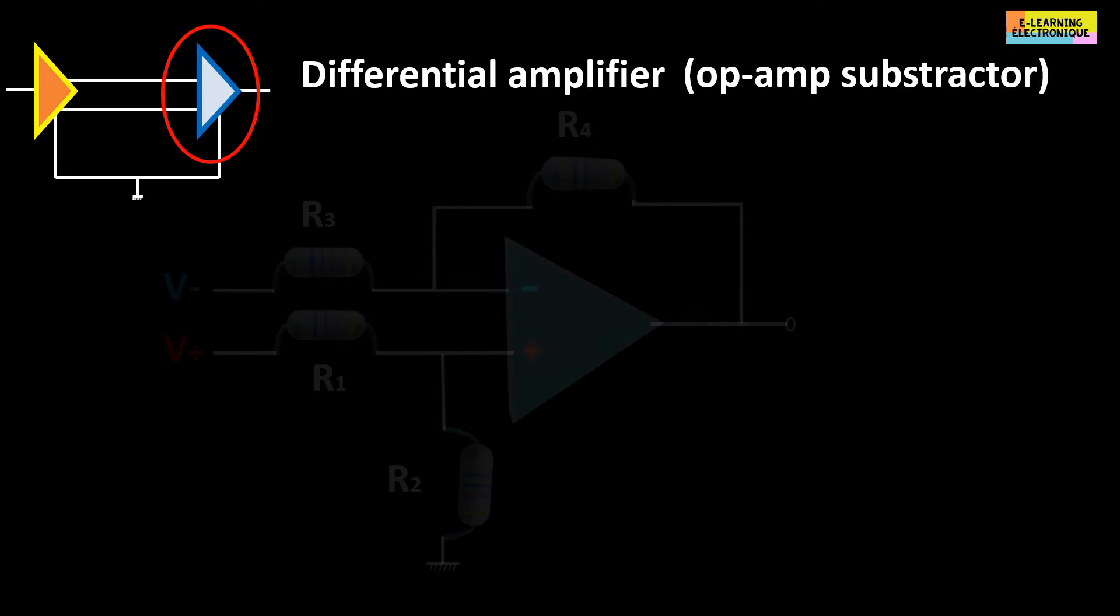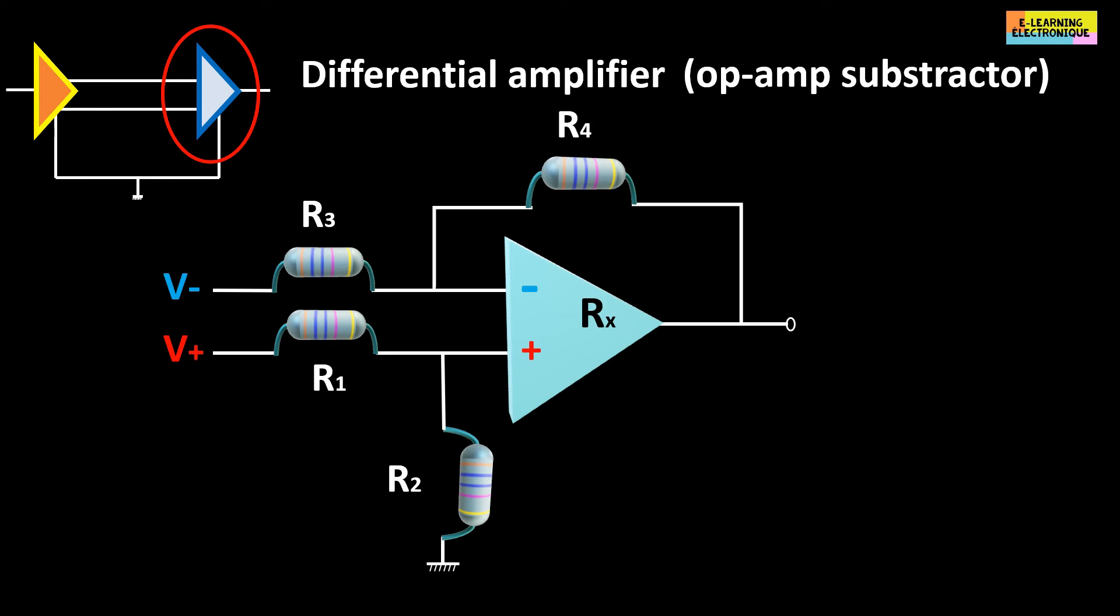In our symmetrical assembly, at the output of the receiver RX is a differential operational amplifier. Its role is to perform a mathematical operation such as subtraction. This amplifier produces an output signal proportional to the difference between the signals applied to its two inputs. The output voltage VO will be equal to V+ minus V- multiplied by K, K being the gain of the amplifier.